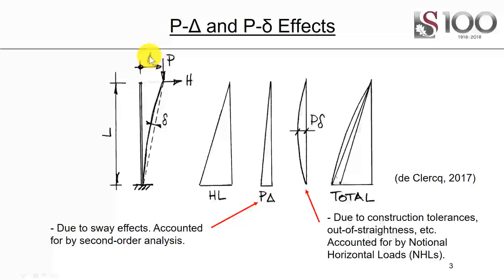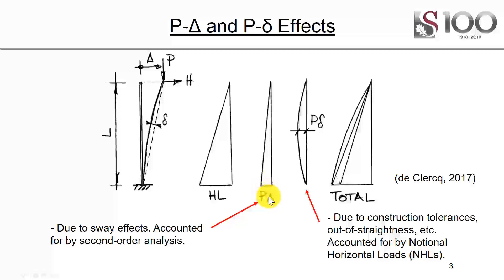P-big-delta is when you have a deformation — a deflection — which causes additional moment. P-small-delta is imperfections. If we have a horizontal load and a vertical load applied to a simple cantilever, the normal bending moment will just be H, the horizontal load, times the height. But then there will be an additional sway effect — P-big-delta — and that is a second-order effect accounted for through a second-order analysis. Construction tolerances and out-of-straightness are accounted for by notional horizontal loads, that P-small-delta, giving you a total bending moment diagram to consider.